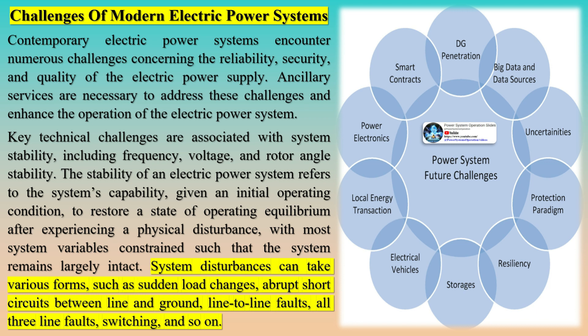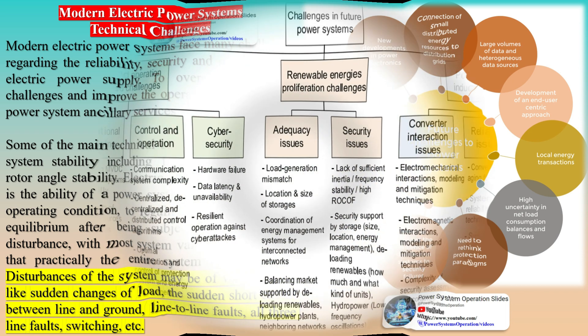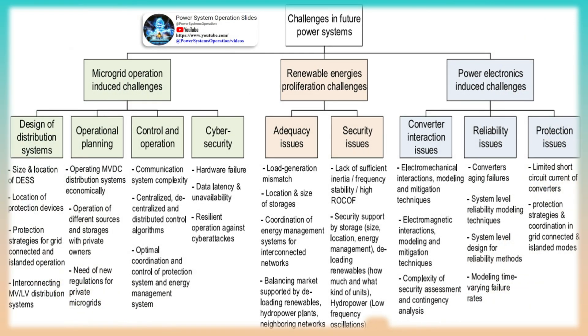Variable renewable energy introduces three main considerations for the procurement of ancillary services: the unpredictability and uncertainty of wind and solar energy increase the need for various ancillary services, impacting the scheduling and pricing of these services. The impact of variable RE varies based on system conditions, making it challenging to generalize the demand for ancillary services across different timescales and systems. Permitting variable RE to contribute to ancillary services can increase the power system's supply, but may also present challenges due to the unique characteristics of these variable resources.